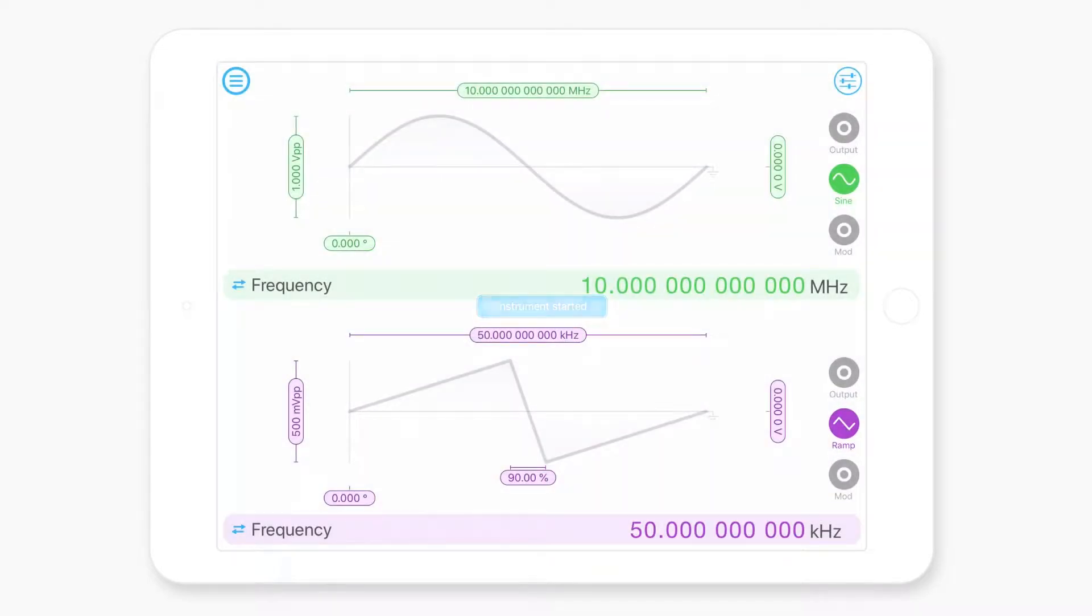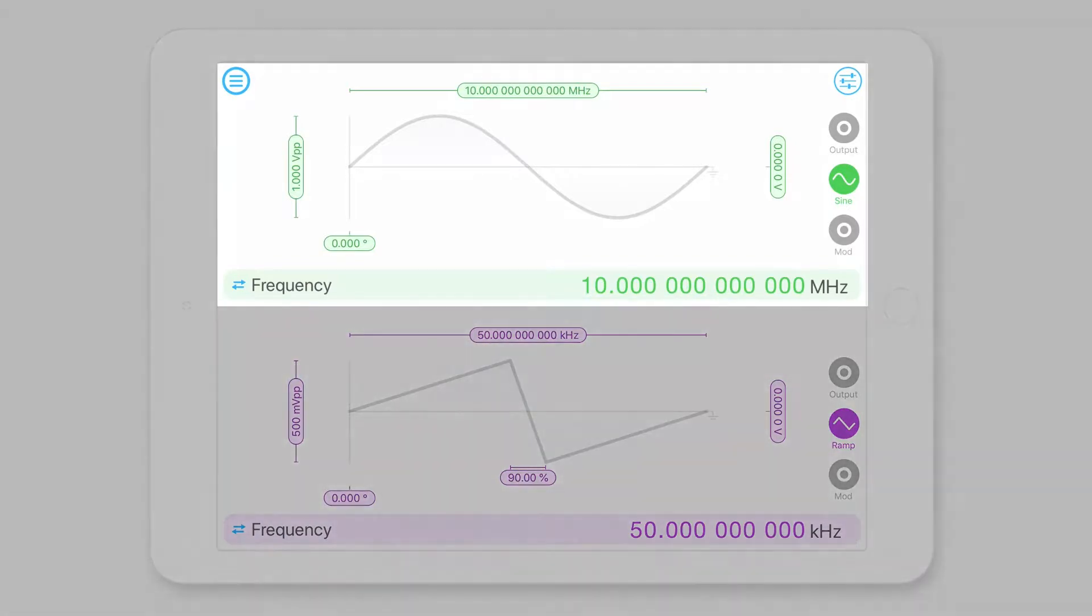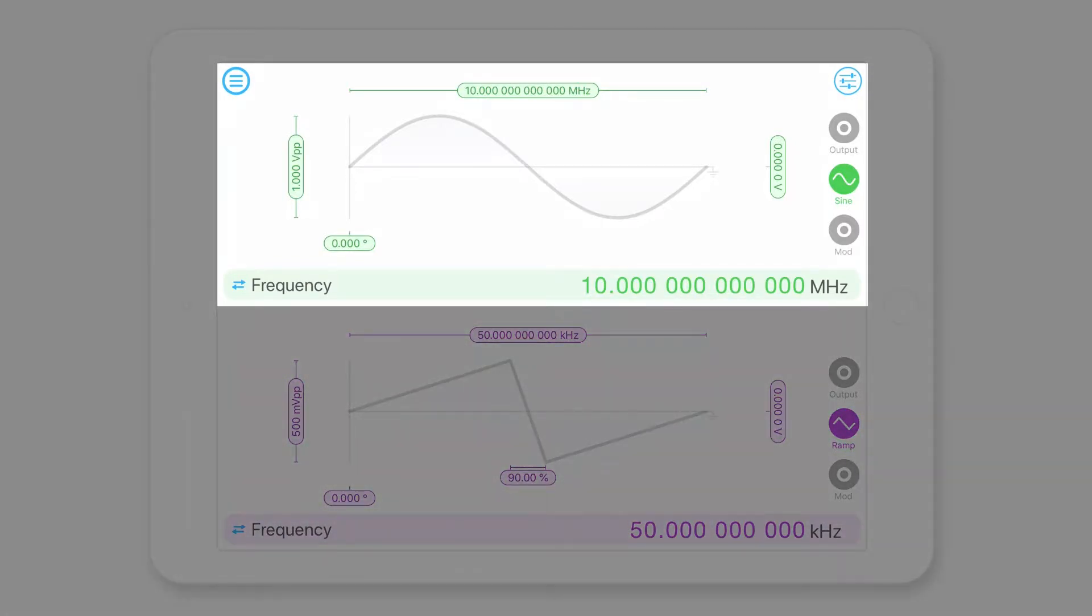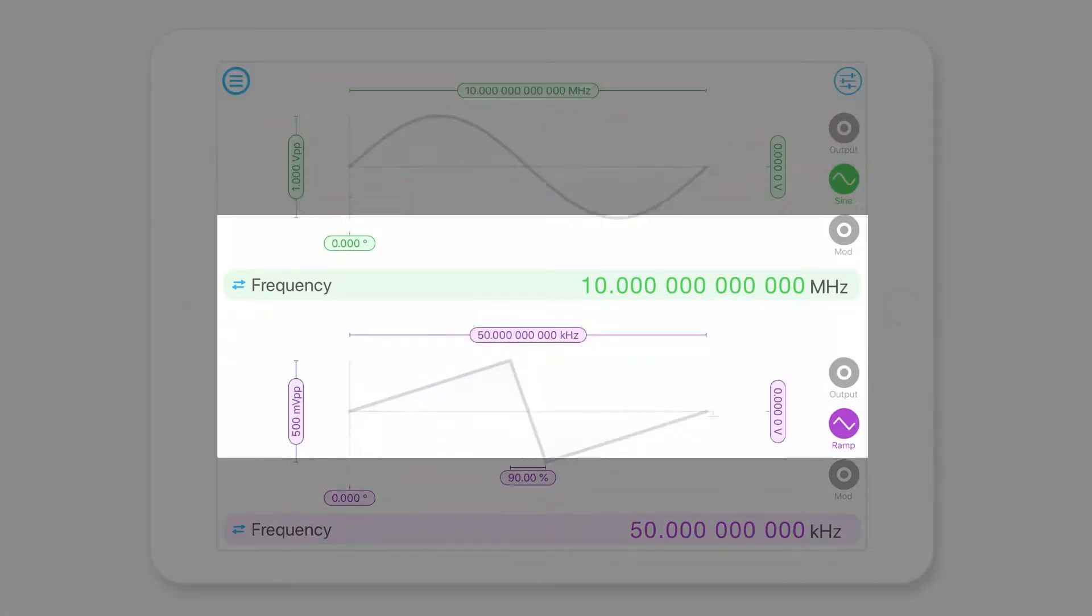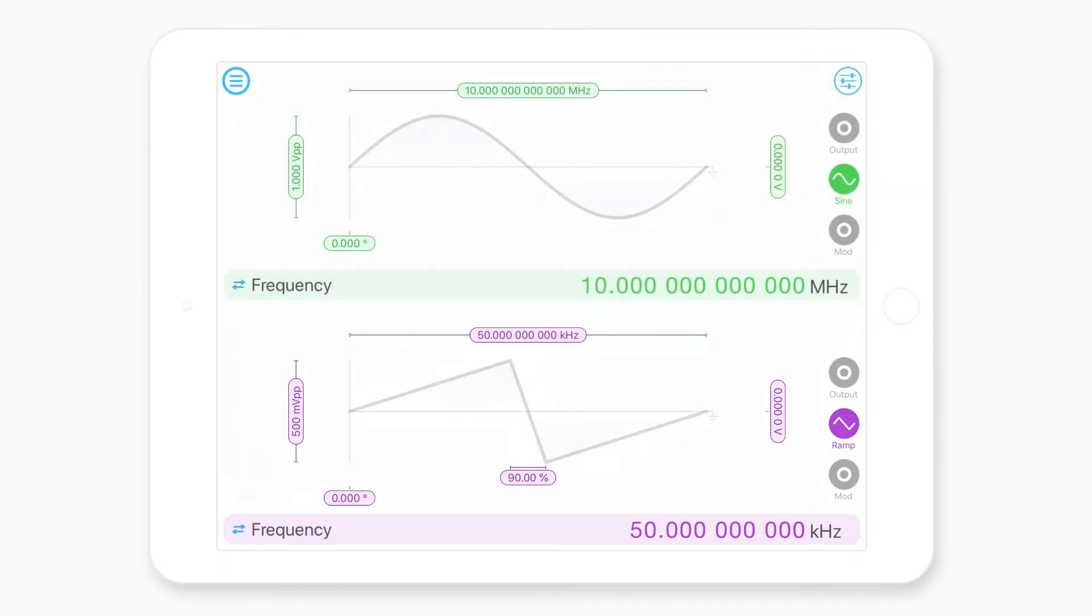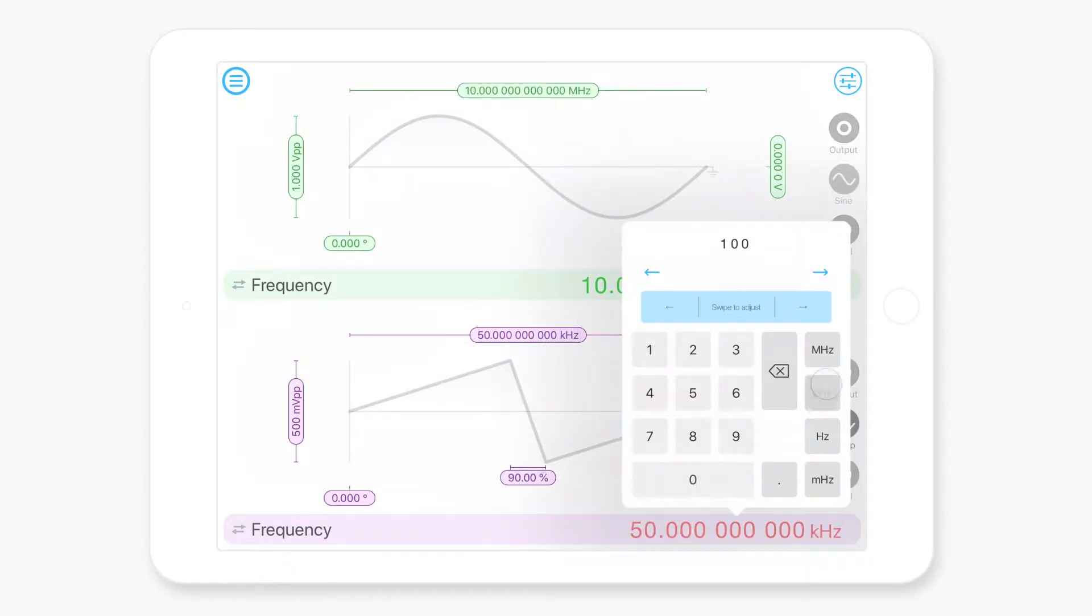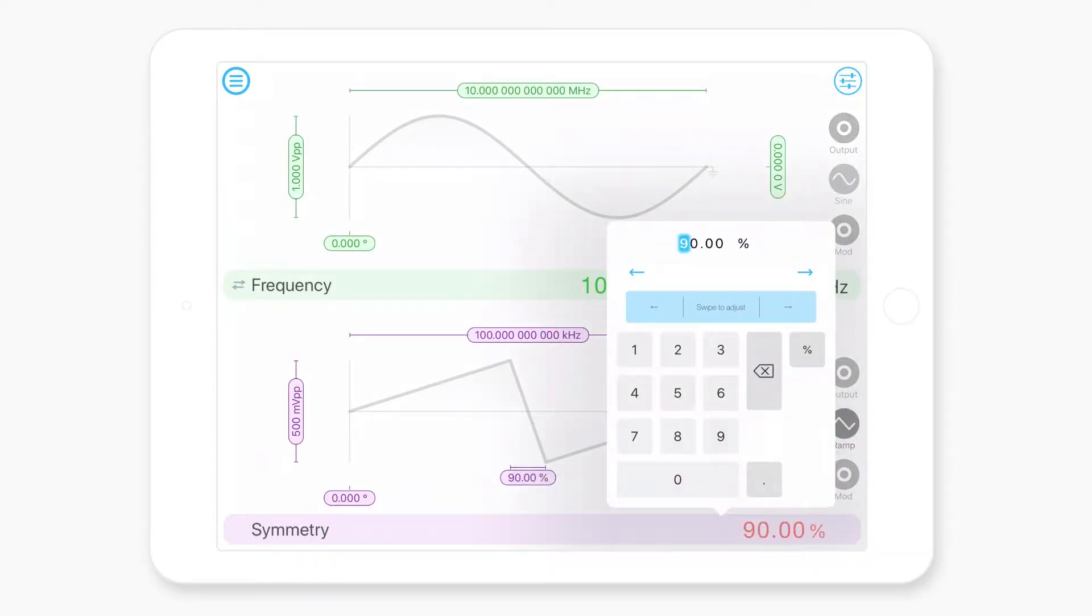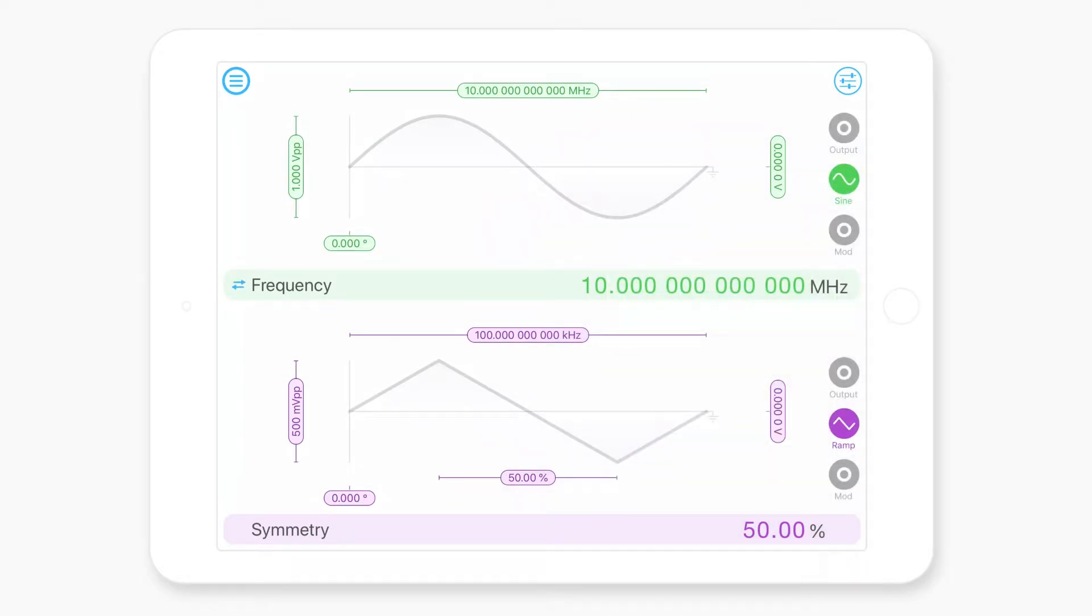So when you first launch the instrument you'll see that it is divided up into two sections. Up the top we have the settings for output channel 1 and down the bottom we have the settings for output channel 2. From here you can configure pretty much every parameter that you need depending on the waveform. So for the sawtooth wave down the bottom we can tune its frequency, symmetry, amplitude and things like phase.